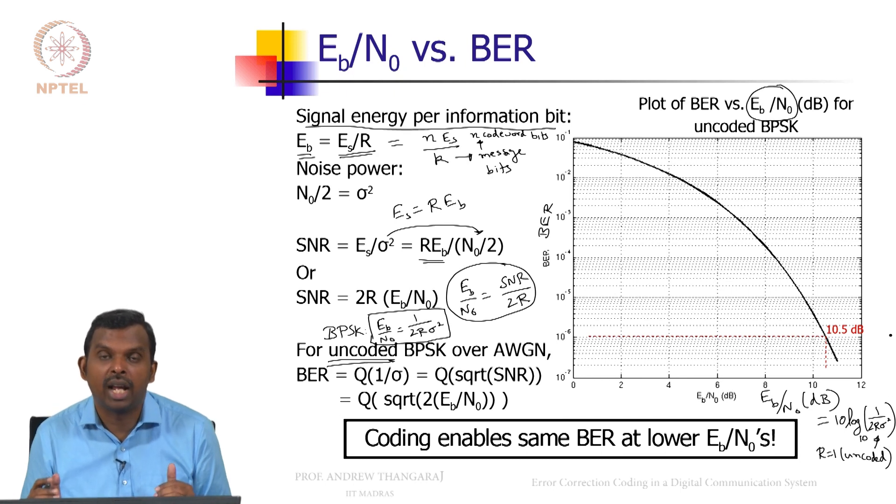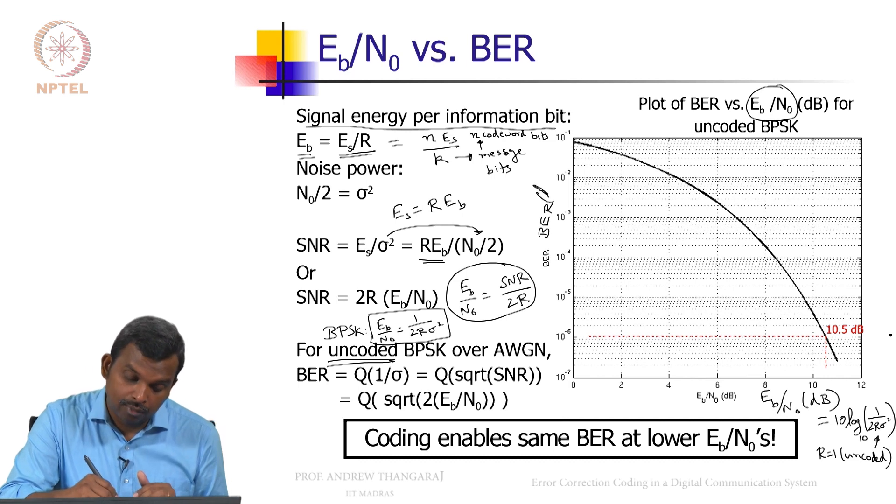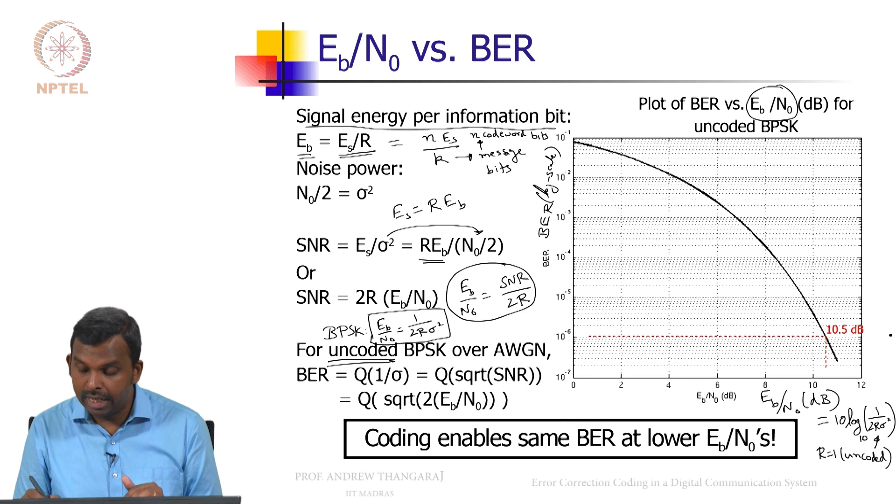This graph is very, very important for any error control coding class. You should be able to generate this plot of BER versus Eb over N0, BER in the log scale and Eb over N0 in dB scale for uncoded BPSK.